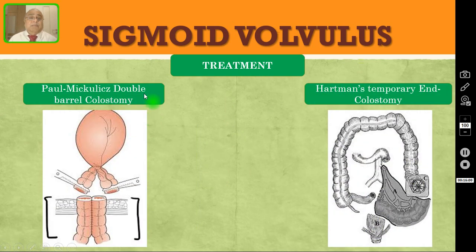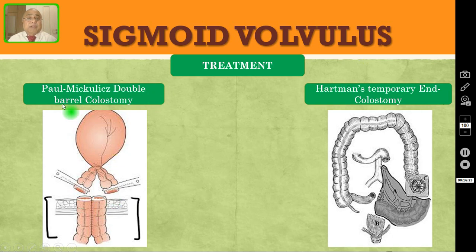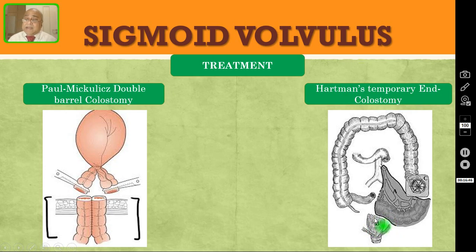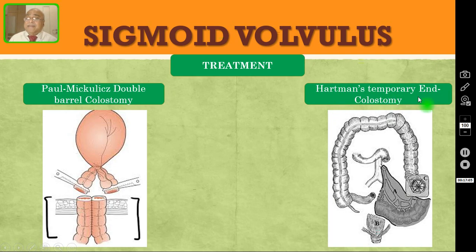After resection, you can do two types of colostomy. One is the Paul Mikulicz double barrel colostomy: you exteriorize the loop of sigmoid colon outside, resect the colon, and bring both the proximal and distal ends together as a double barrel — both are lying nearby. In Hartmann's procedure, you resect the sigmoid colon, bring the proximal colon out as a temporary end colostomy, and close the distal segment, keeping it inside the peritoneal cavity. So in Hartmann's procedure, only the proximal end comes out as a temporary end colostomy.